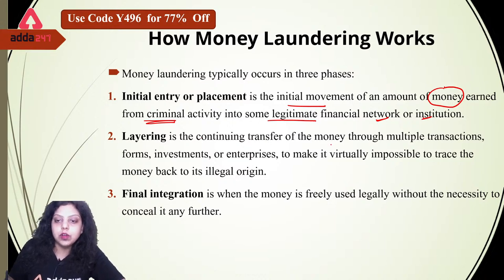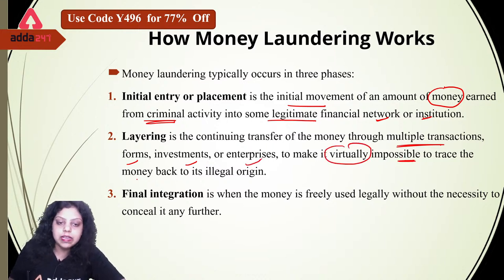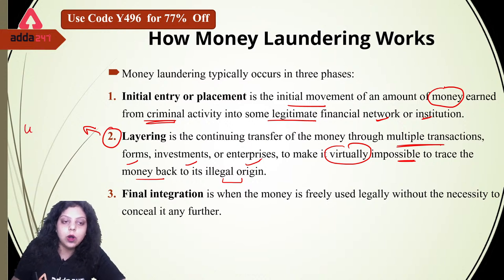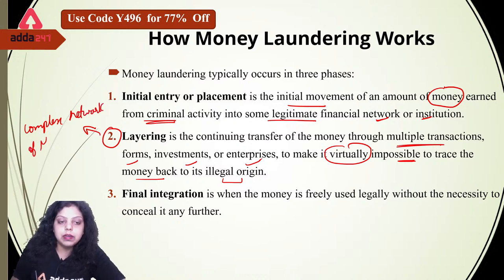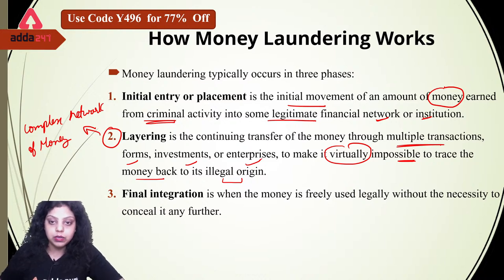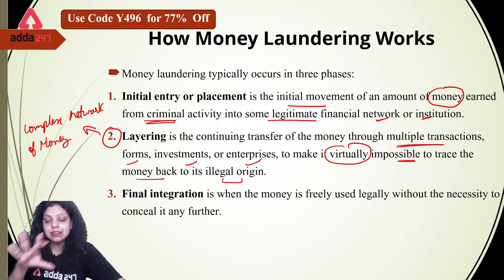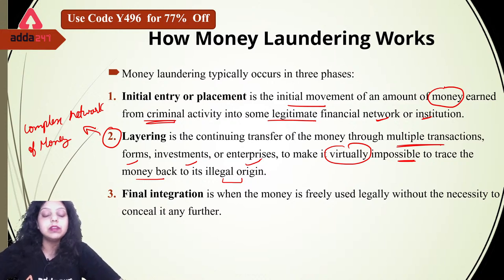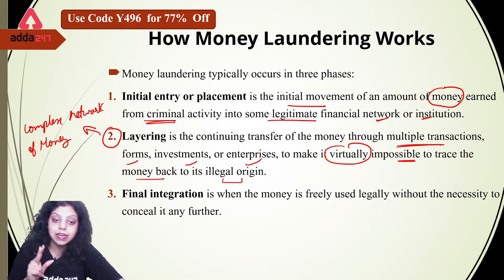Layering is the continuing transfer of money through multiple transactions, forms, investments, or enterprises to make it virtually impossible to trace the money back to its illegal origin. In the layering stage, we are trying to create a complex network of transactions so that the money will not be easily identified by officials. We are transferring money through multiple transactions, multiple forms, multiple investments or enterprises, converting the money in a way that makes it virtually impossible to trace which sector the person invested in. It is hard to identify or trace the money — this complex network of transactions is the second stage, layering.